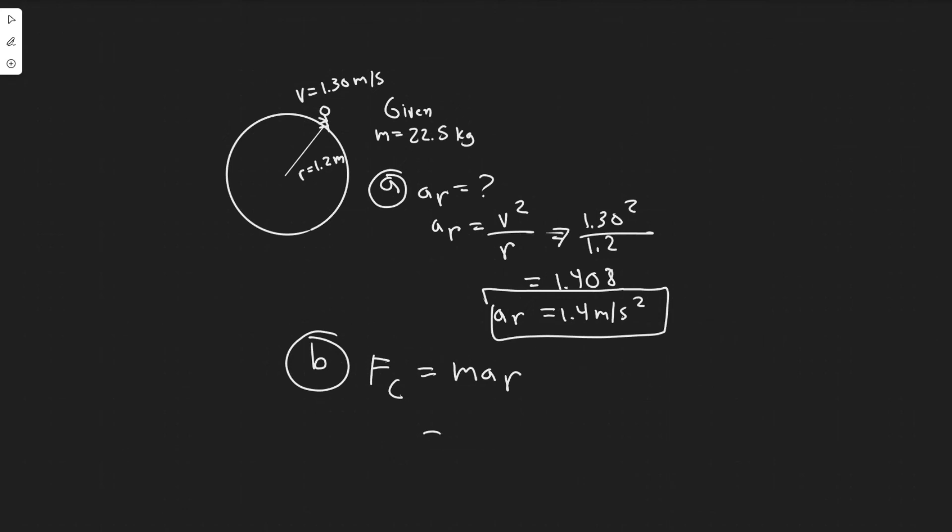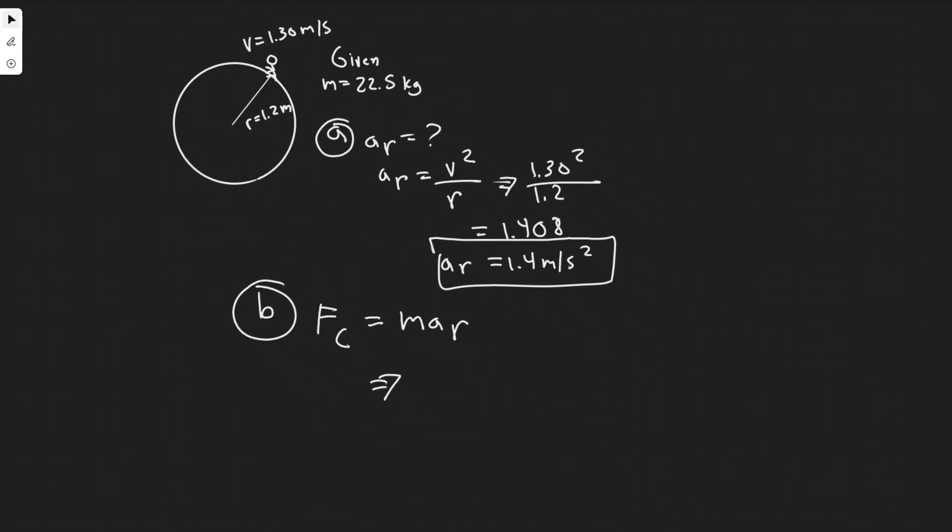So just like the normal F equals M A, but with centripetal. They give us the mass too, so it's just 22.5, and then we're multiplying this by the 1.4. So plugging this in, 22.5 times 1.4,